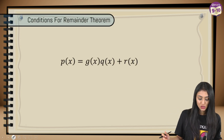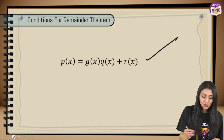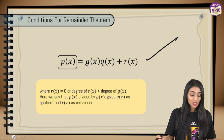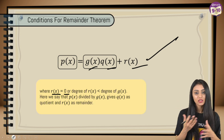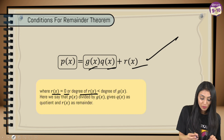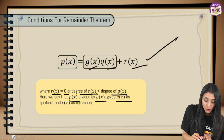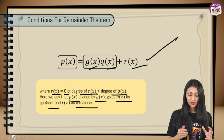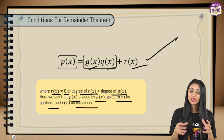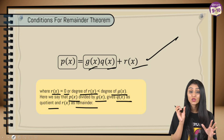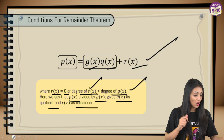Now let's look at the conditions for the remainder theorem. This is based on the division algorithm: dividend equals divisor times quotient plus remainder, i.e., p(x) = g(x)·q(x) + r(x). Either r(x) is 0, or the degree of r(x) is less than the degree of g(x). That tells us when division is complete — if you're not getting 0, check that the degree of r(x) is less than the degree of g(x).